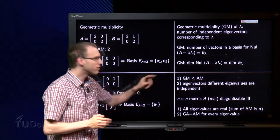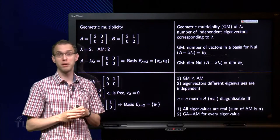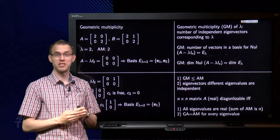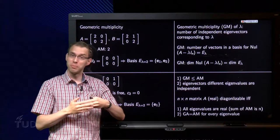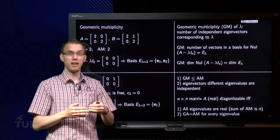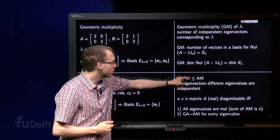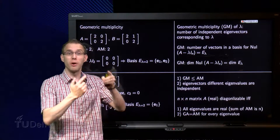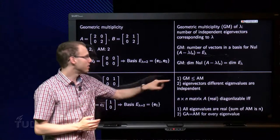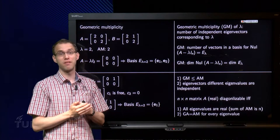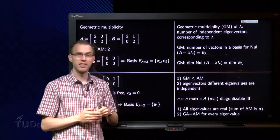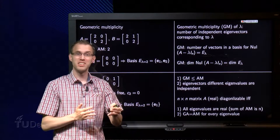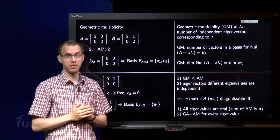Since geometric multiplicities are less than or equal to algebraic multiplicities, and the sum of all algebraic multiplicities equals n, the sum of geometric multiplicities is less than or equal to n. If the sum is strictly less than n, we don't have enough eigenvectors. But if we have equality — meaning the geometric multiplicity equals the algebraic multiplicity for every single eigenvalue — then we have exactly enough eigenvectors. Therefore, a matrix is diagonalizable if and only if the geometric multiplicity equals the algebraic multiplicity for every eigenvalue.